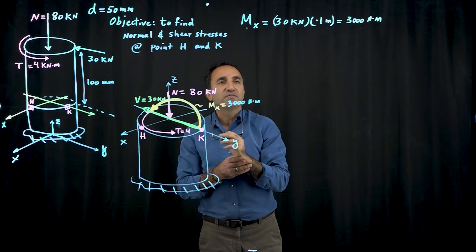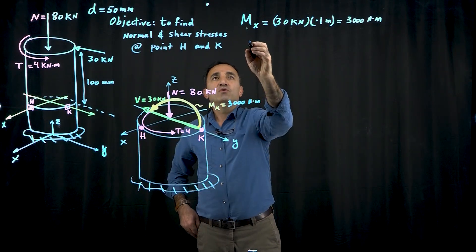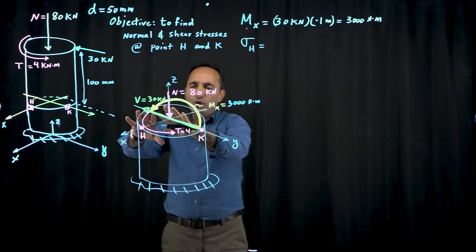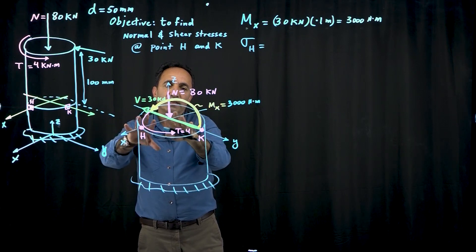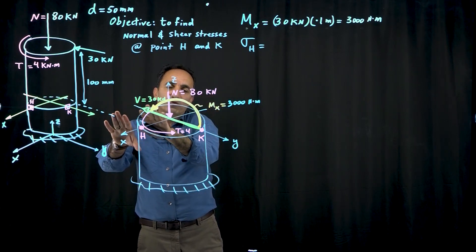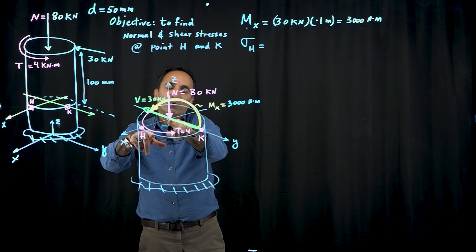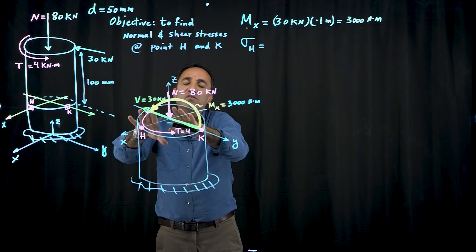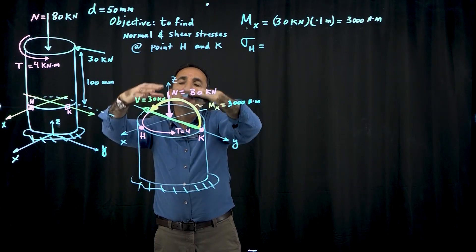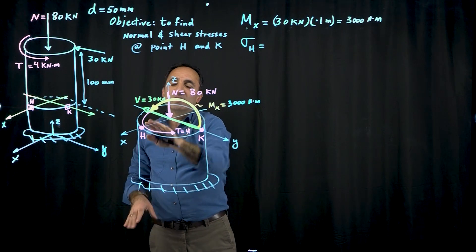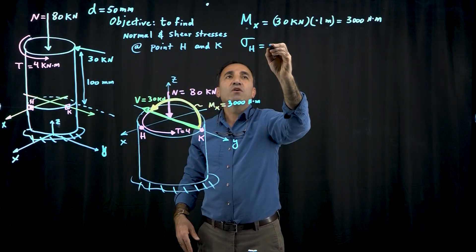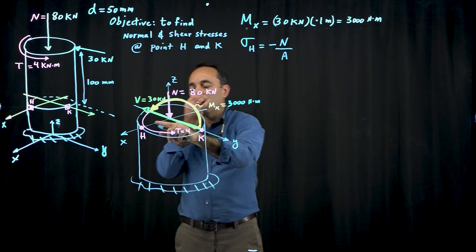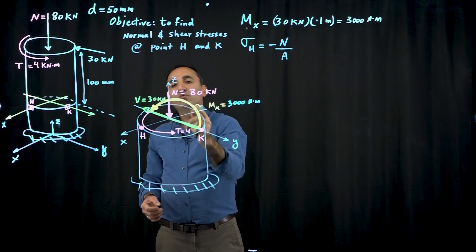We're ready to calculate normal stresses. I'll start with sigma at H. All points on this section are compressed due to the normal force—don't just think about the center point. Imagine if this cylinder is capped and you're applying load uniformly; every point is compressed.